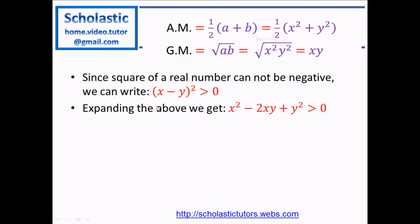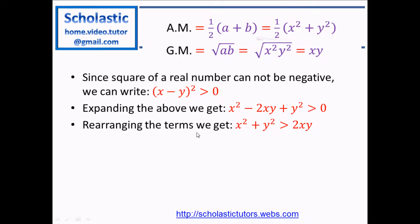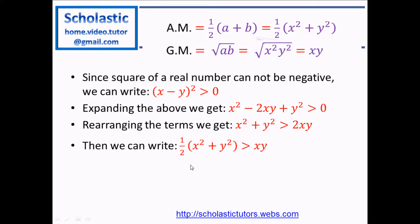Now, what we are going to do is expand this expression. (x minus y) squared becomes x squared minus 2xy plus y squared, which is still greater than or equal to zero. Now, we rearrange the terms: take the negative 2xy to the right-hand side and keep x squared plus y squared on the left-hand side. So x squared plus y squared is greater than 2xy. Dividing both sides by 2: half times (x squared plus y squared) is greater than xy.